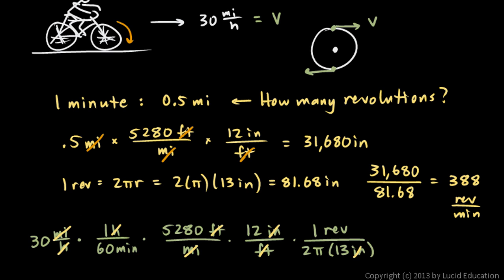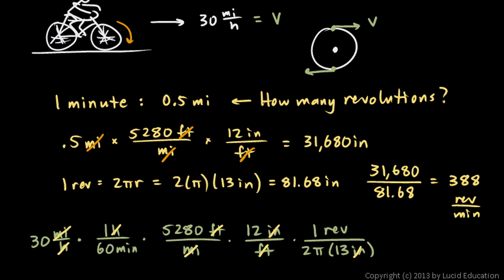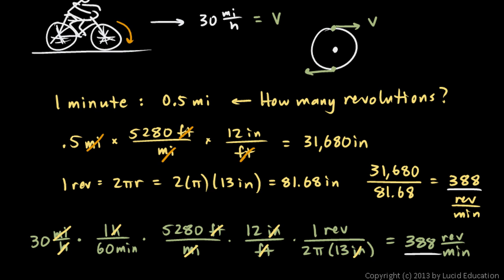The answer is 30 times 5,280 times 12 divided by 60, and also divided by 2π times 13 — which comes out to 388 revolutions per minute. Either way of thinking through the problem is perfectly valid, and of course you get the same answer. Thank you.